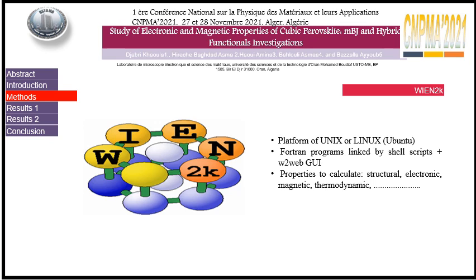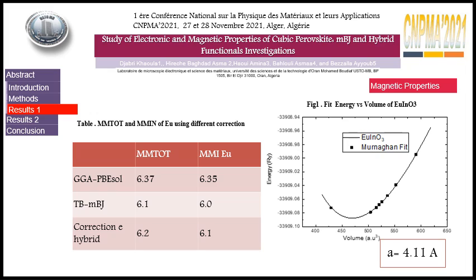The first table below shows us the total magnetic moment and initial state of Europium (Eu), a rare earth element. We have concluded that the MBJ correction and hybrid correction affect the total magnetic moment, which is less than when using just GGA without correction.